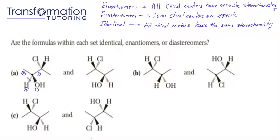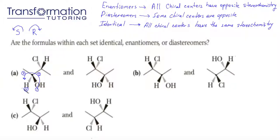After the priorities have been assigned, we check: is the lowest group — hydrogen — going in? Is it dashed? Hydrogen is the lowest group, and indeed it is going in, therefore we do not need to change anything. We just put our numbers together: one, two, three, we go like this. If we're going in the counterclockwise configuration, this is S. And if we're going in the clockwise configuration — to the R, to the right — this is R. Therefore, we went in the S configuration, and I'm going to assign S configuration to this chiral center.